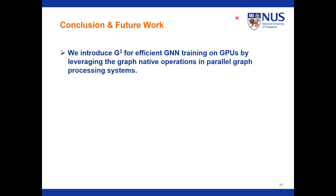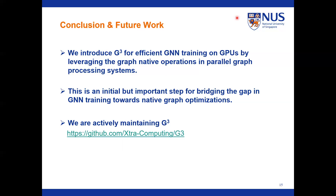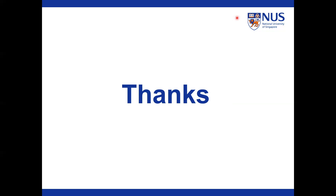Here comes the end of our demonstration. To conclude, we introduce GQ for efficient GNN training on GPUs by leveraging native graph operations in parallel graph processing systems. We believe this is an initial but important step for bridging the gap in GNN training towards native graph optimizations. We are actively maintaining GQ, and you can find all the code and materials at our GitHub repository. We would like to open source the Singapore COVID-19 datasets and hope to introduce GQ to the broader AI community for wider adoption. Thank you for your time and attention — I would be happy to open up for discussion.